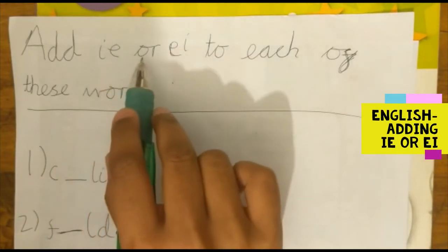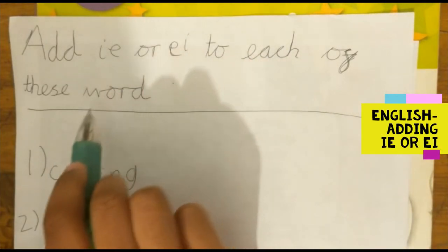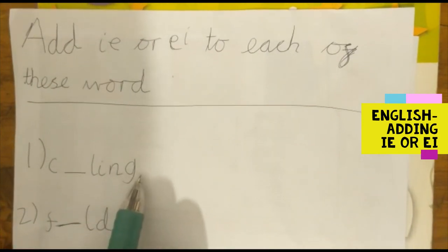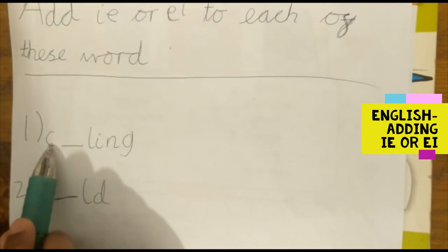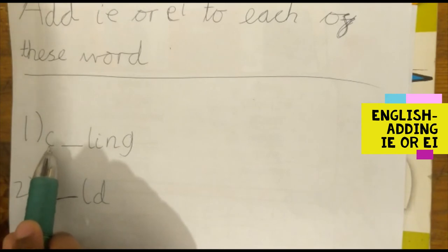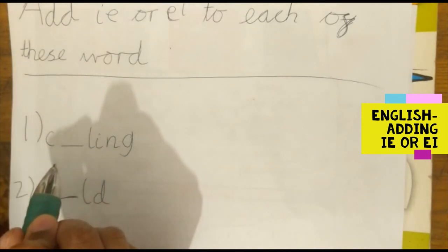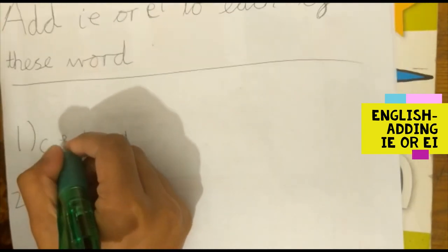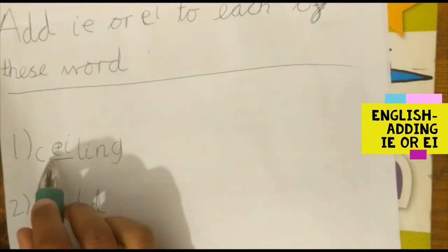Add IE or EI to each of these words. The first word we have is C-something-L-I-N-G. We know that because the first letter is C, it has to be EI — when C appears before the blank, you must use EI. So the word is ceiling.